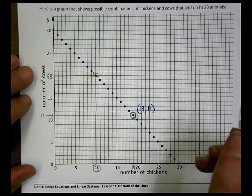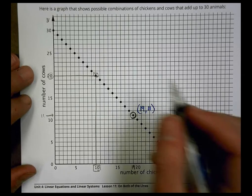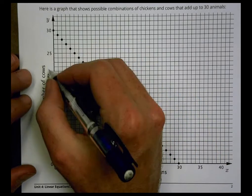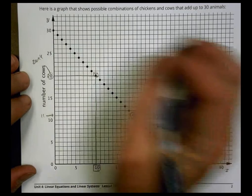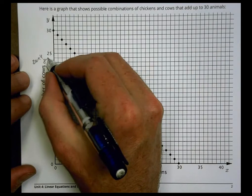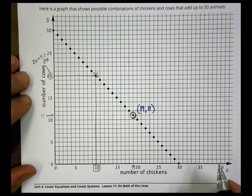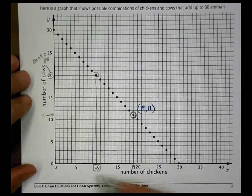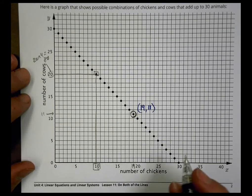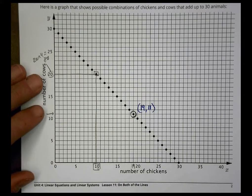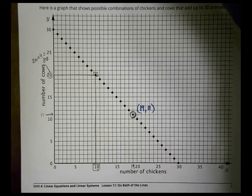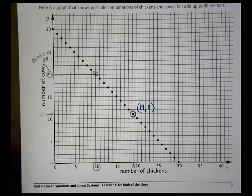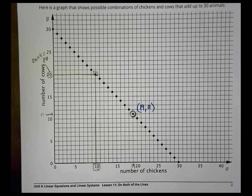But does 20 cows and 10 chickens satisfy the leg constraint? 20 times 4 is already 80 legs, leaving only 2 legs for 10 chickens — that doesn't work. So we have to check both conditions. Anyway, that's how you use a table and graph together to solve this. Have a great one — see you next time!